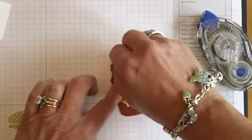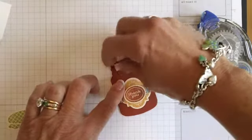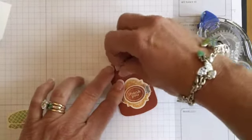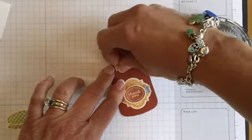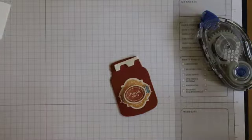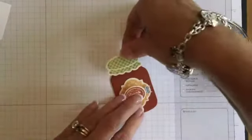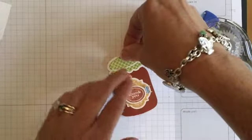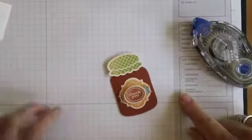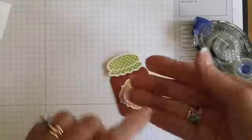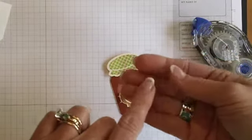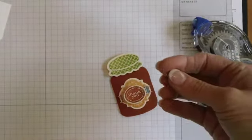Then we'll add another dimensional and we're going to add this at the very top. This is where your jar top is going to go so let me peel this off, there we go, and we are going to put our little jar lid right there. And then we can add a button, I've already tied the linen thread on and we're going to attach it with the glue dot.